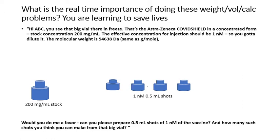Where do you see this kind of problems? You see them in everyday lab calculations. I'm giving two examples here. First, this is like a conversation in a vaccine industry. Your supervisor might come someday and tell you, 'Hello ABC, you see that big vial there out of the fridge?' This is a vaccine in concentrated form, let's say 200 milligram per mL.